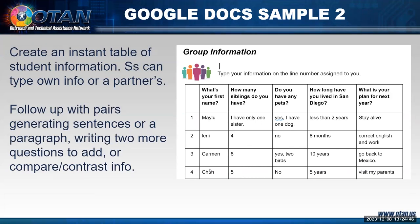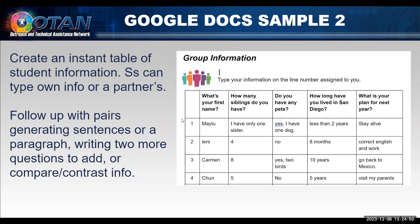You can create an instant table of student information. Students could type their own information or partners could type for each other. You make a table with a series of questions and assign each student a number — if you don't, they might start typing on top of each other when sharing the document. You can follow up with pairs generating sentences from the content or a paragraph. Student number one writes about student number two, student number two writes about three, and so on, so everyone is writing about someone else efficiently. They could also write more questions to add, or compare and contrast.